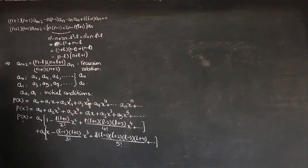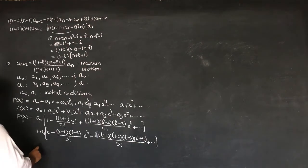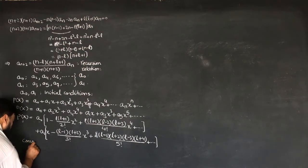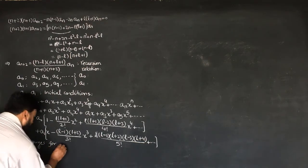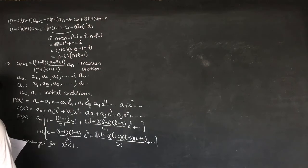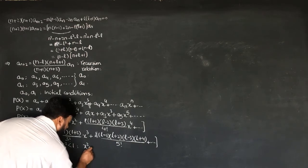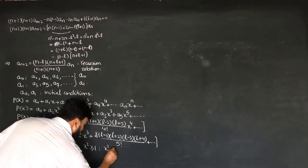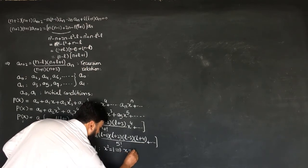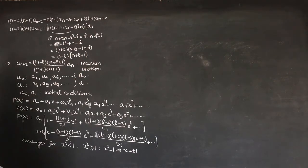This solution converges for x^2 less than 1, while it diverges for x^2 greater than or equal to 1. That is, for x equal to plus or minus 1, this series diverges, and we will have to terminate the series.